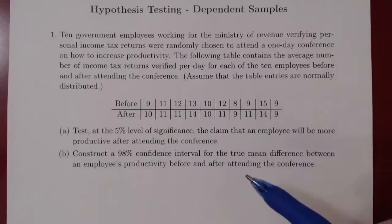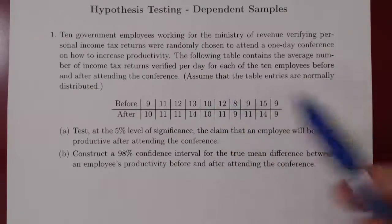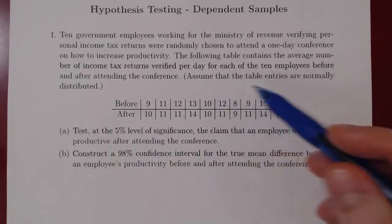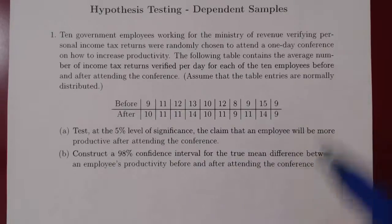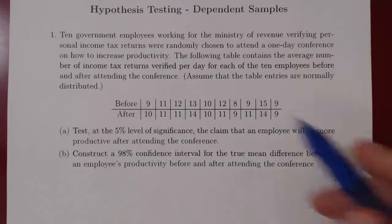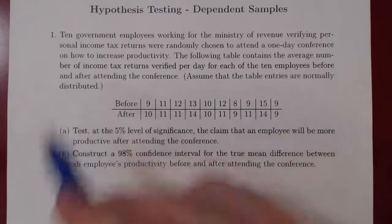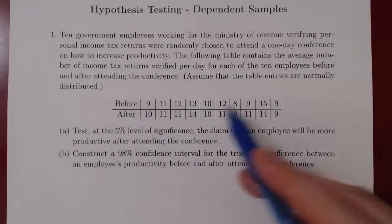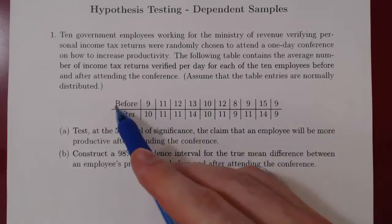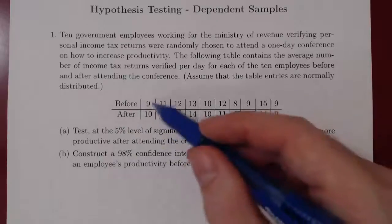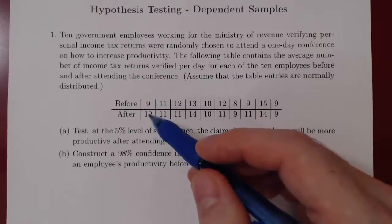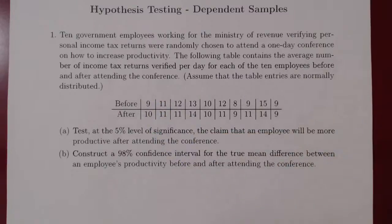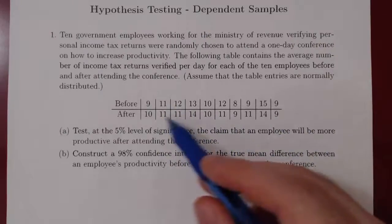Because we only have 10 pairs here, we have to assume that the table entries follow a normal distribution. If we don't know this, we would have to have a sample of at least 30 employees or more, and then we could quote the Central Limit Theorem and proceed as we are going to under the assumption of normality. So we have our 10 employees, with before scores and after scores.